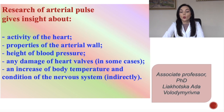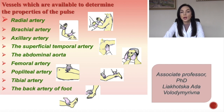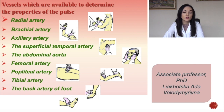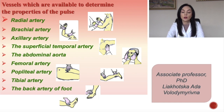The vessels available to determine the properties of the pulse include: the radial artery, the brachial artery, the axillary artery, the superficial temporal artery, the abdominal aorta, the femoral artery, the popliteal artery, the tibial artery, and the dorsal artery of the foot.